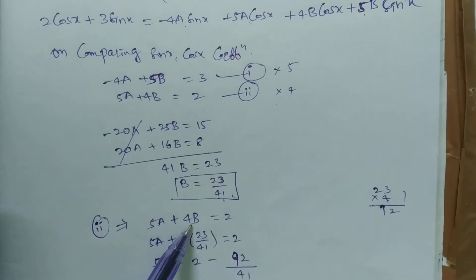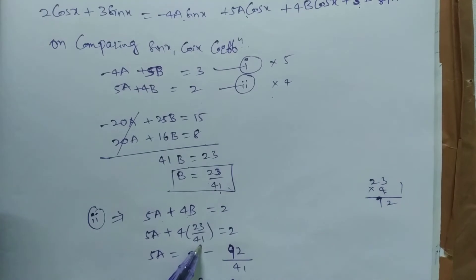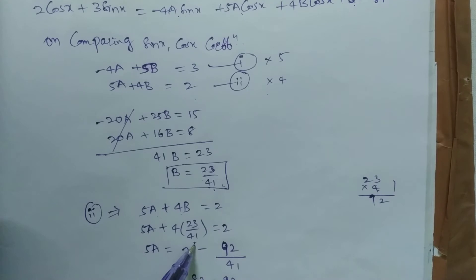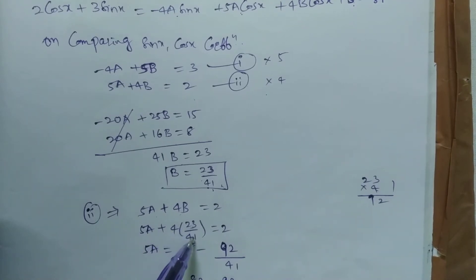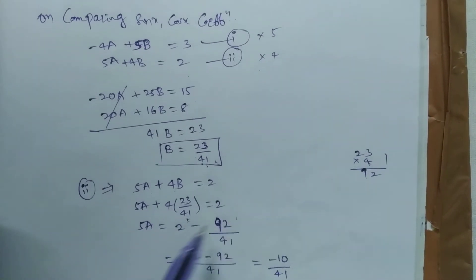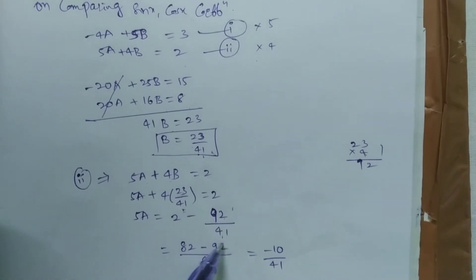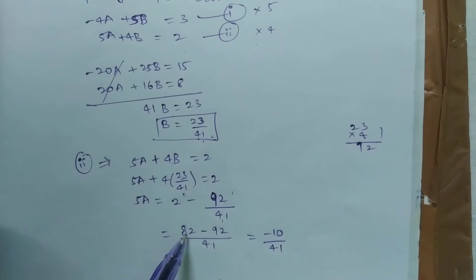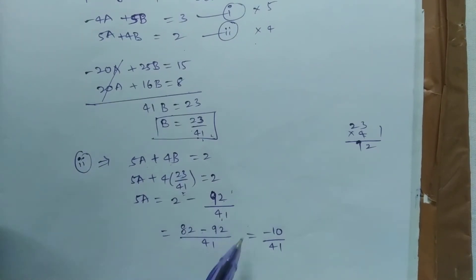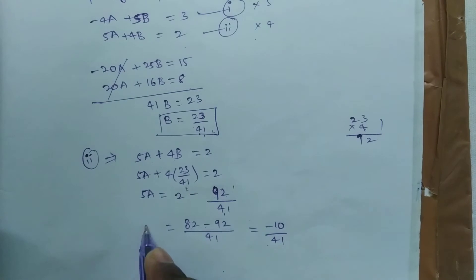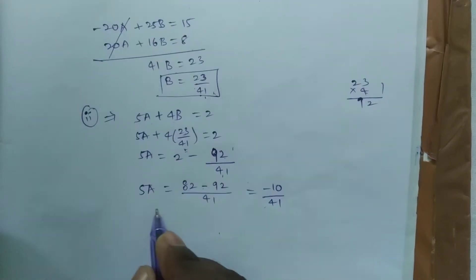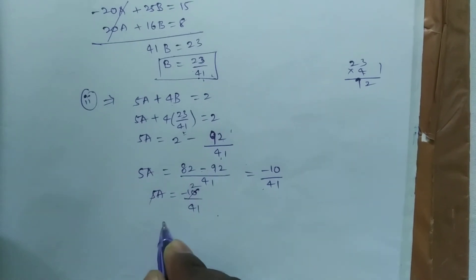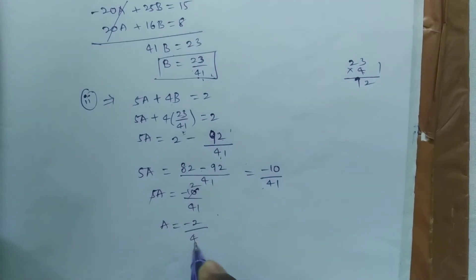Substituting B = 23/41 into equation (2): 5A + 4(23/41) = 2, so 5A + 92/41 = 2. That gives 5A = 2 - 92/41 = 82/41 - 92/41 = -10/41. Therefore A = -2/41.